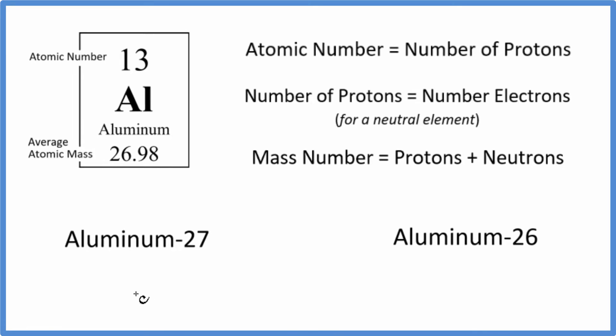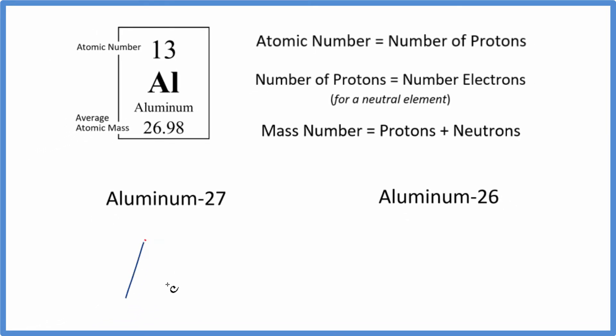When we write the isotope notation, we're going to write the element symbol, that's Al for aluminum, and then the mass number, that'll go up here. The atomic number will go down here, and if it has a charge, we'll put that out here.